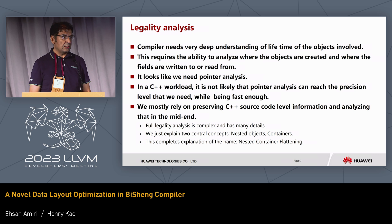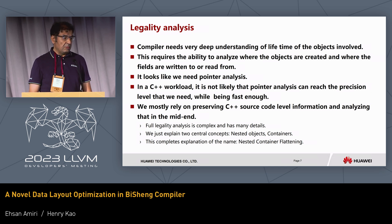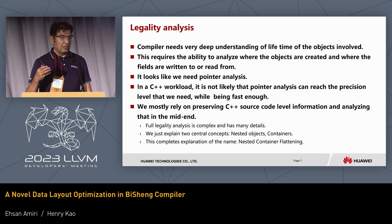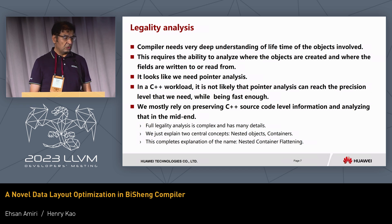Now let's talk about the legality analysis we need to do. For a transformation like this, you need a very deep understanding of the lifetime of objects — when we create them, when we allocate and deallocate them — and the first thing that comes to mind is that we need a pointer analysis. But having a pointer analysis that has both precision and speed is very difficult. So while we do some pointer analysis, we also heavily rely on preserving C++ source code information, using it in the mid-end to help with legality analysis. I want to explain two central concepts in our legality analysis: the notion of nested objects and the notion of container. Once I do that, this completes the explanation of the name — nested container flattening.